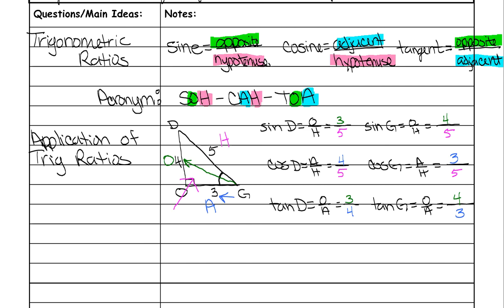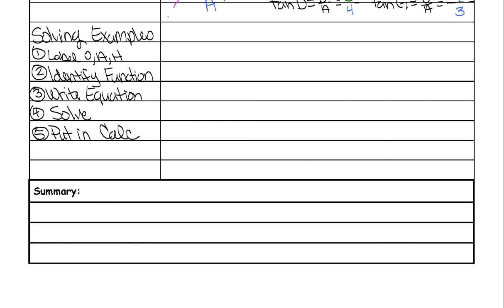Now that we've done the applications of trig, how do you actually solve a triangle using trig ratios? Your steps are: number one, label the different sides as opposite, adjacent, and hypotenuse. Then identify which function — sine, cosine, or tangent — to use. Write the equation. Then solve it. Lastly, put it in a calculator. You cannot do this without a calculator that can take sine, cosine, and tangent of angles in degrees.